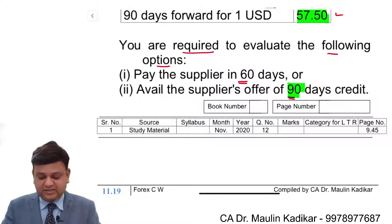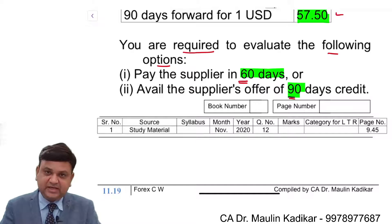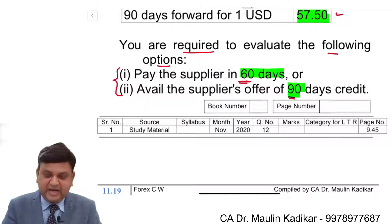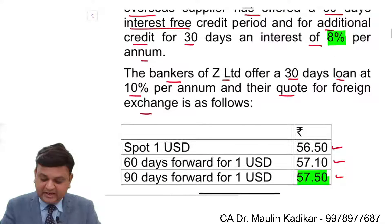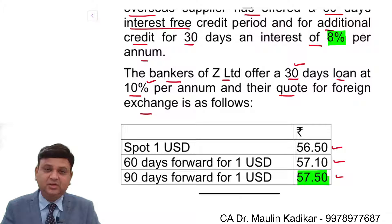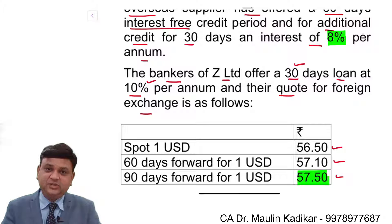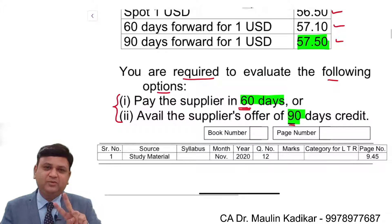However, in the first case, the question only says pay the supplier in 60 days. So it is implied for a student to understand that, in order to make both options comparable, we will borrow at the end of 60 days for a 30-day period. This is what we understand, and we will make both options comparable.